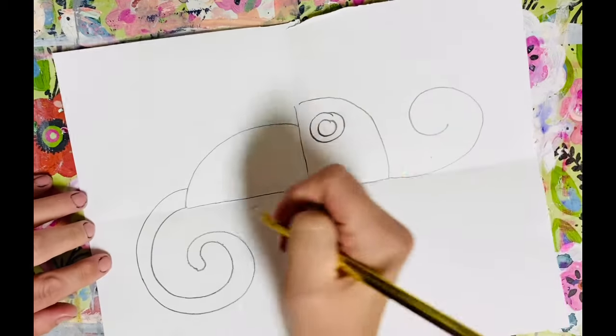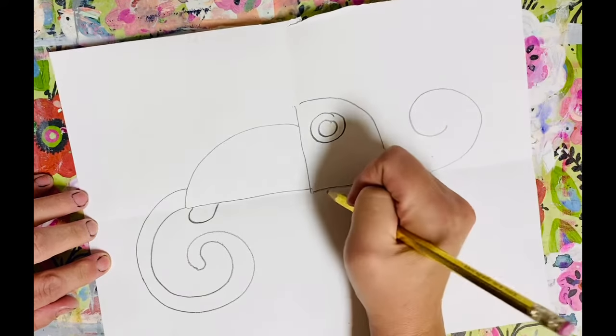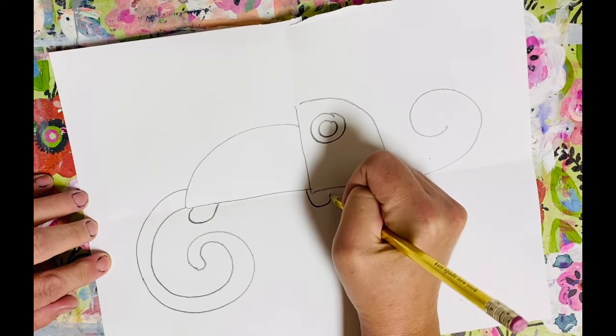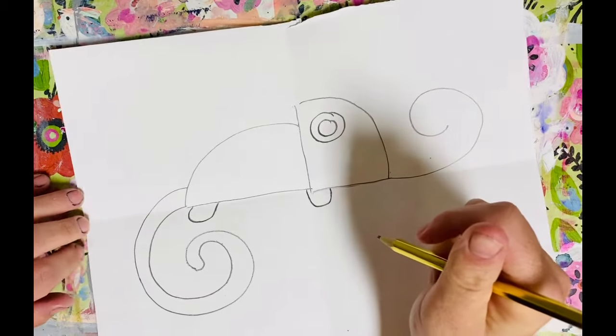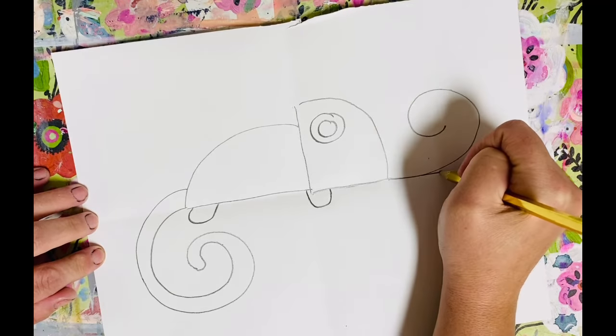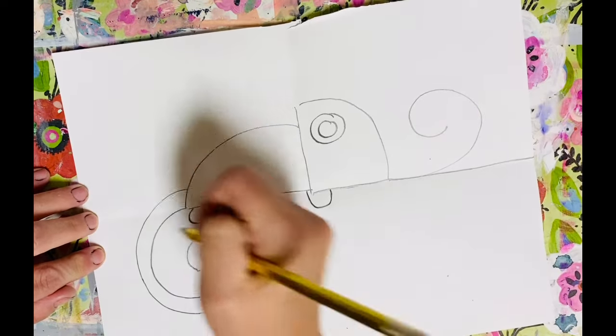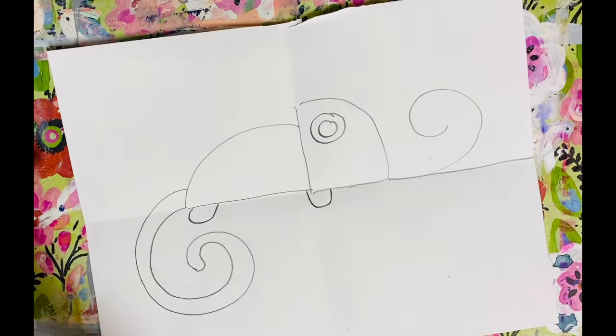You need some little feet as he's hanging out. So I'm going to draw one little foot in the front and one little foot at the back of his body. He's hanging out on a branch. I don't know if you've ever seen a chameleon at the zoo or any little lizards. A lot of times they like to climb up high.